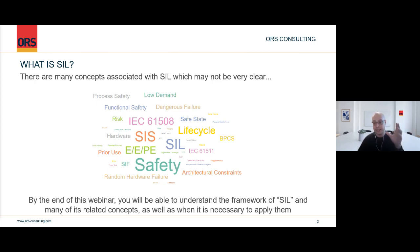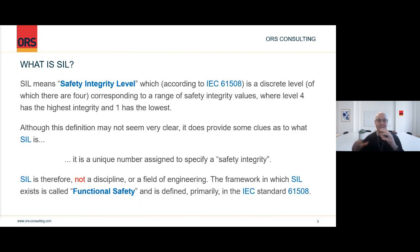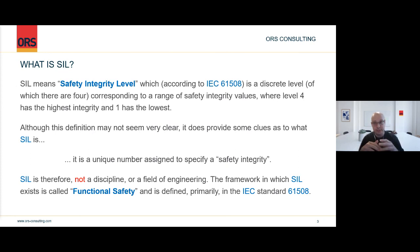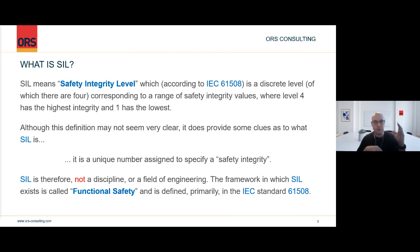SIL means the acronym Safety Integrity Level. SIL is defined in an international standard by the International Electrotechnical Commission — IEC 61508. SIL is a discrete level, of which there are four depending on the industry. For the process industries, we only have three, but as per IEC 61508, there are four levels of SIL, and it corresponds to safety integrity values, where level four is highest and level one is the lowest. It doesn't mean that four is better than one — it's just different safety integrity.